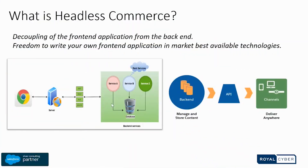Headless commerce is the decoupling or separation of a front-end application from the back end. It allows front-end developers or technology heads to use any front-end application or tool to connect with the back end. In this diagram you can see a back-end system connected via an API to the front end — the major advantage being that your front end is completely separated from your back end through this API bridge, allowing content delivery across multiple devices and channels seamlessly.